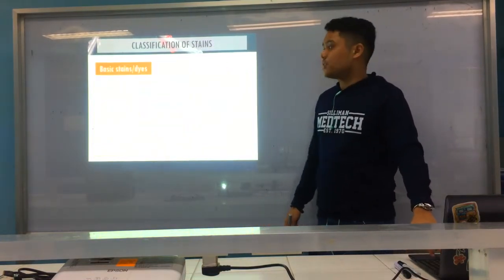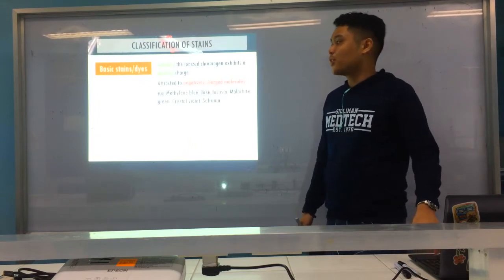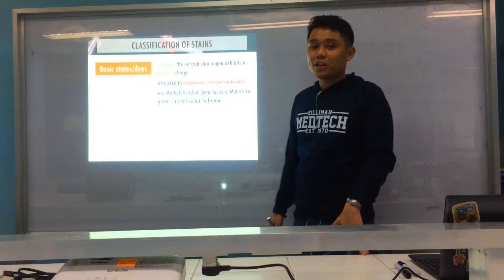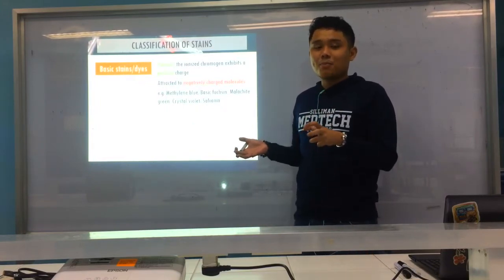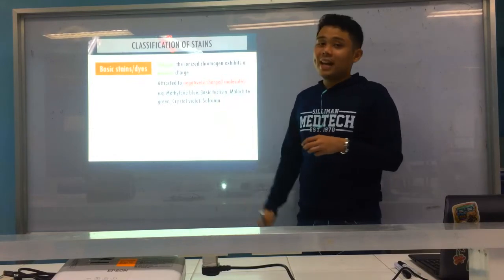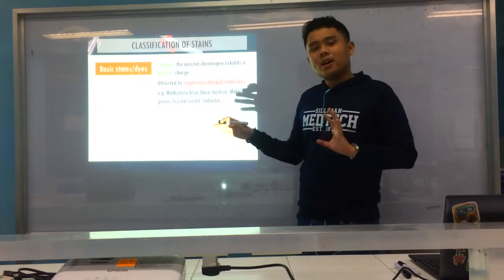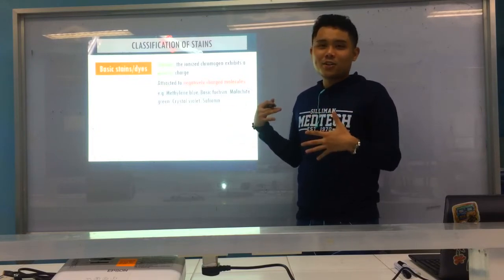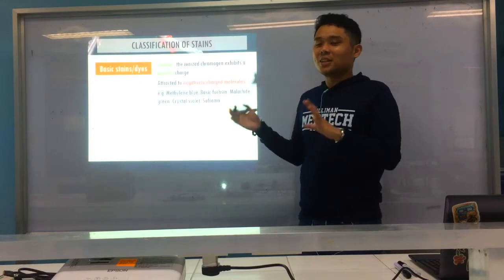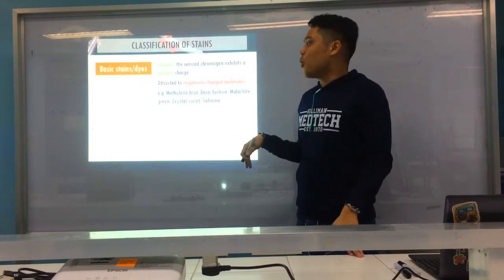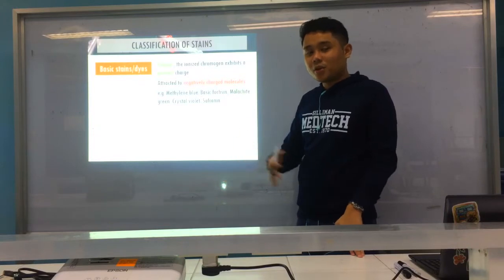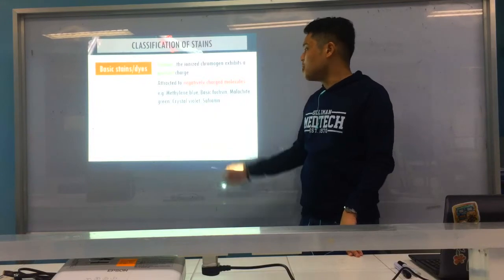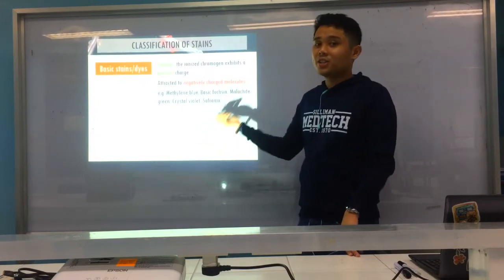Now the different classification of stains. First is your basic stains or dyes. When we say basic, it's cationic — positively charged. Therefore, it's attracted to negatively charged molecules — opposite charges attract, general rule in chemistry. Examples of your basic stains: you have methylene blue, basic fuchsin, malachite green, crystal violet, and safranine.